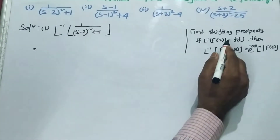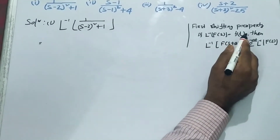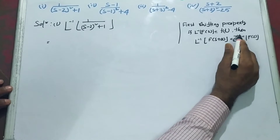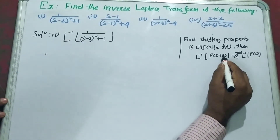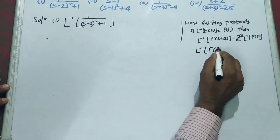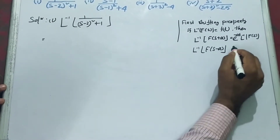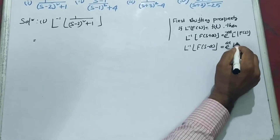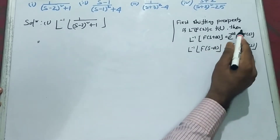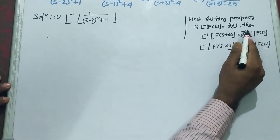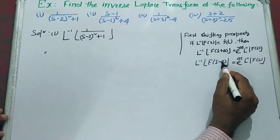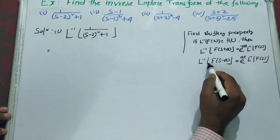Now we know the first shifting property. If L inverse F(s) equals f(t), then L inverse F(s plus A) equals e to the power minus At times L inverse F(s). If it is minus A, then we get plus A in the exponent. So F of s minus A gives e to the power plus At times L inverse F(s).